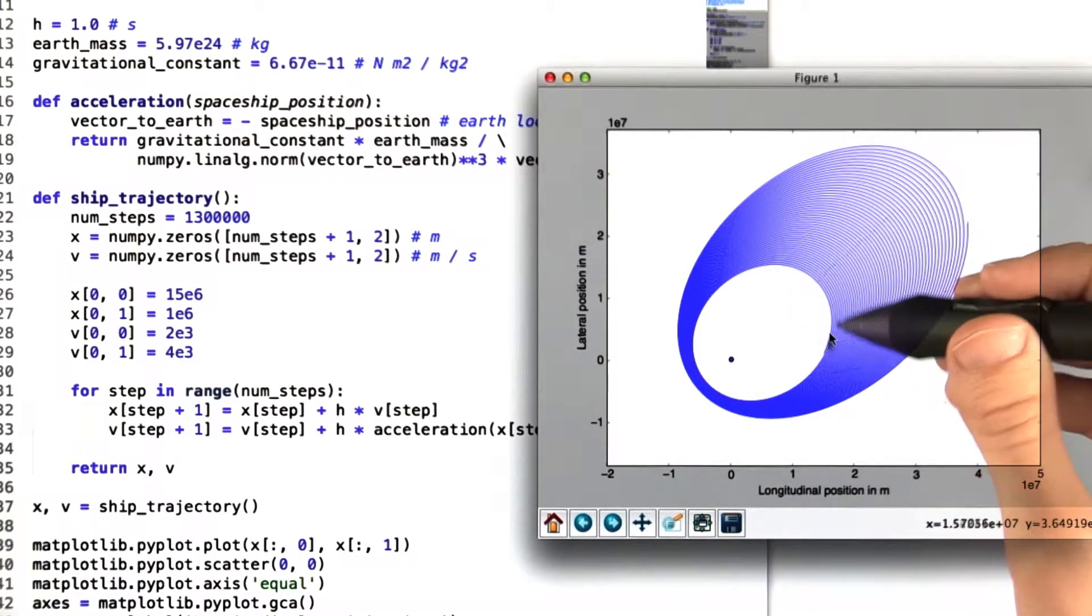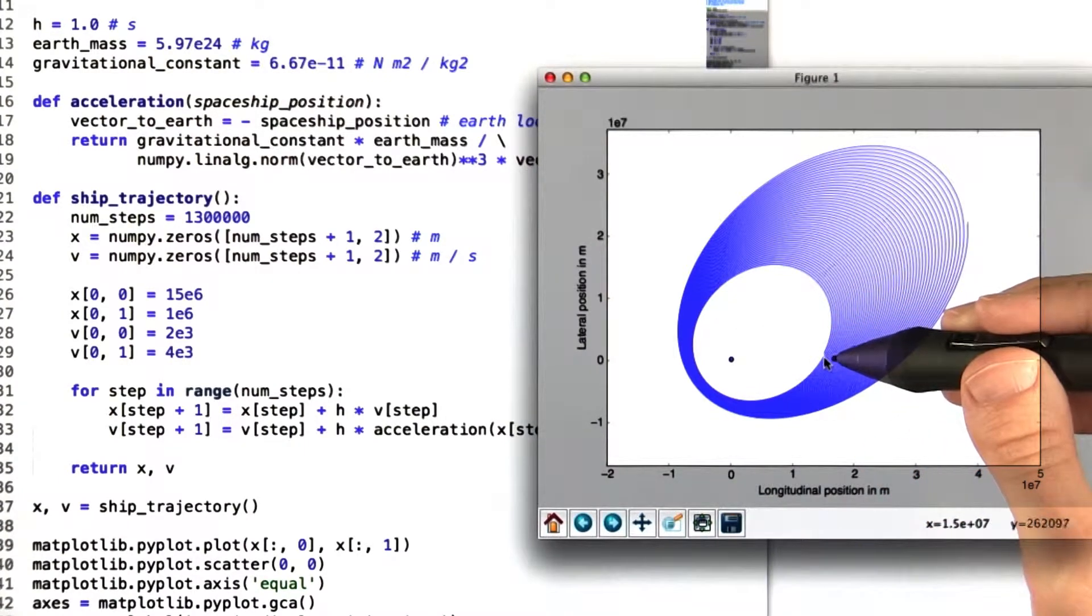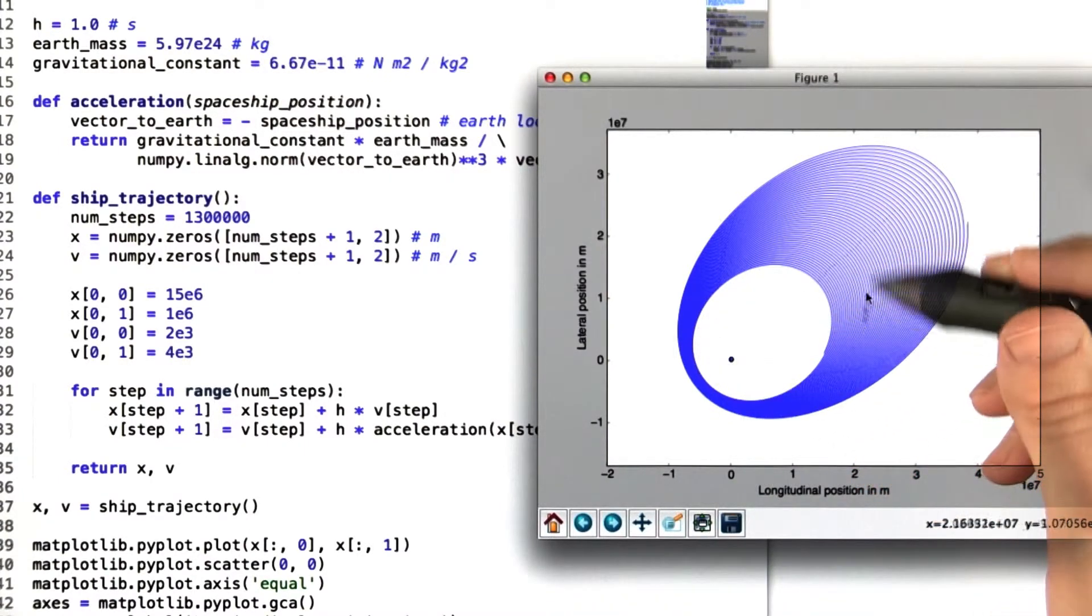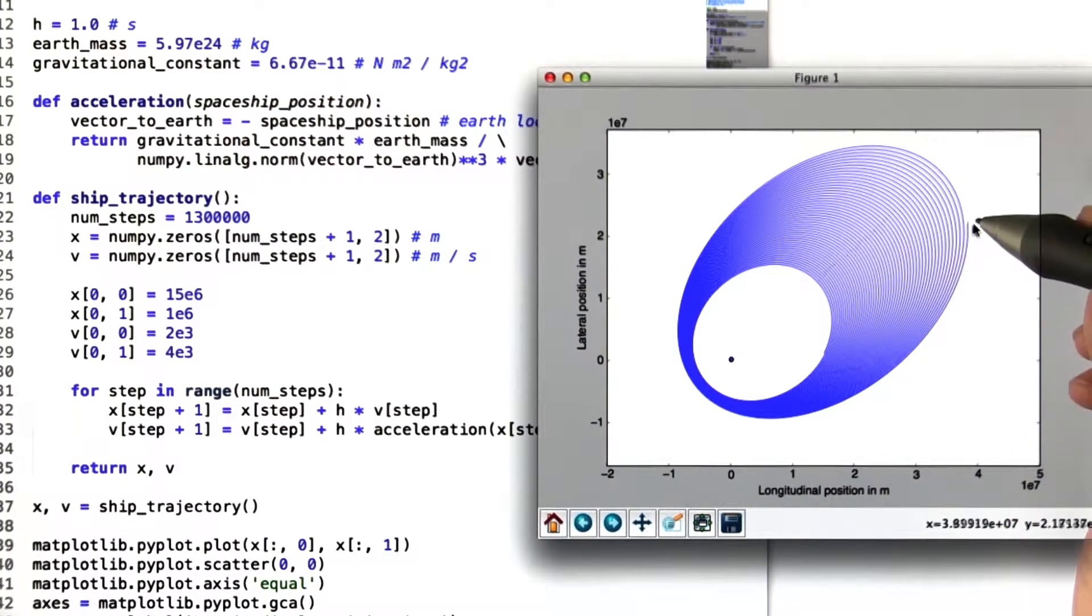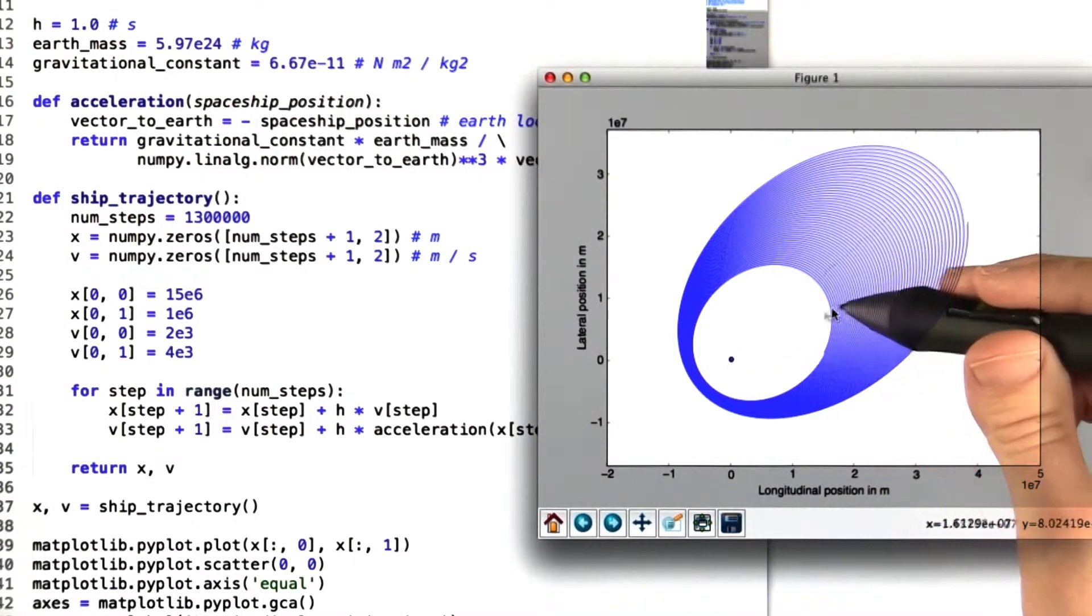So even though in that initial orbit, the trajectory only seems slightly off, if we let that happen over and over and over again, eventually the spaceship will be much further away from Earth than it was originally.